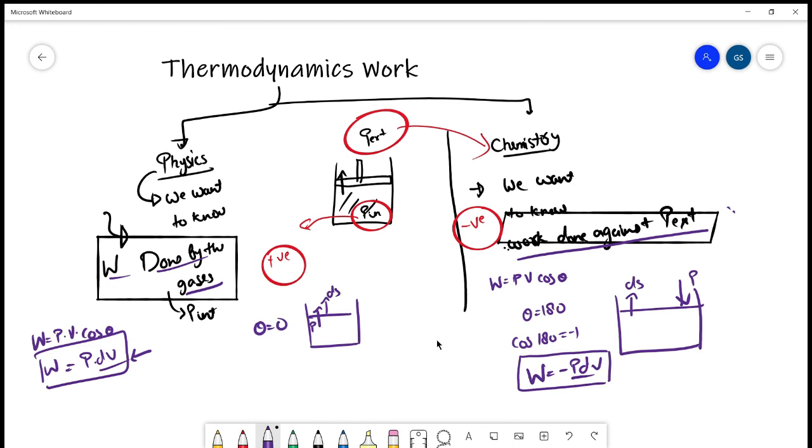It's all about the reference. In chemistry, we want to know the work done against P external in almost all cases. That's why we take work as negative. In physics, we want work done by the gases. So just remember this thing, these boxes, and it will be good for exams. Just summing up: write ΔU as q plus w, and put w as plus P dV in physics and minus P dV in chemistry. Don't get worried about what to put. I hope you understand. Please write in the comments if there is any doubt. Thank you.